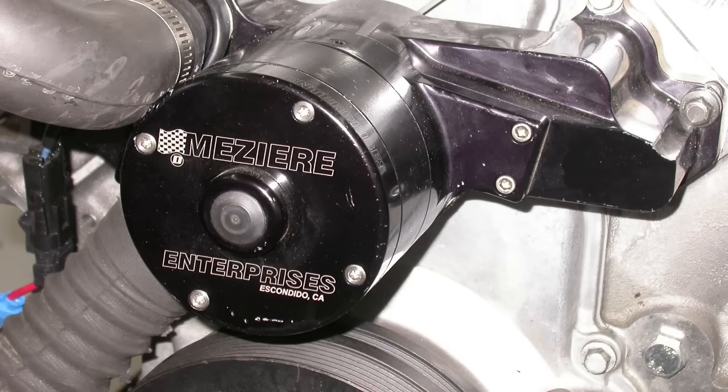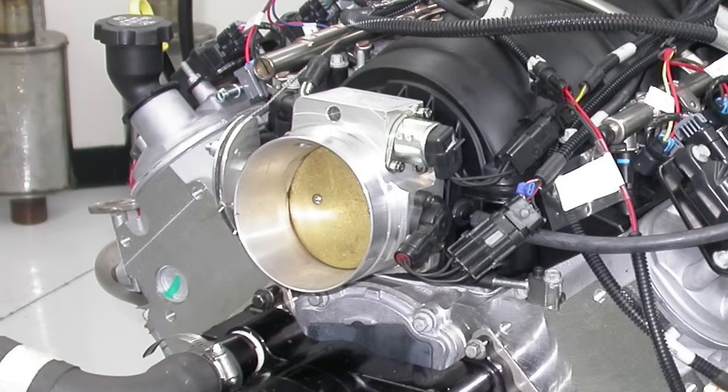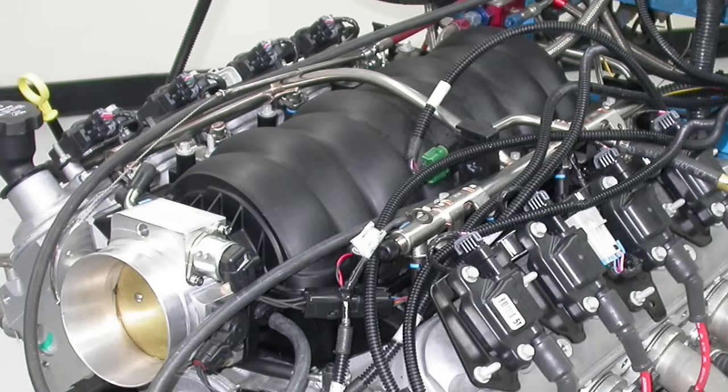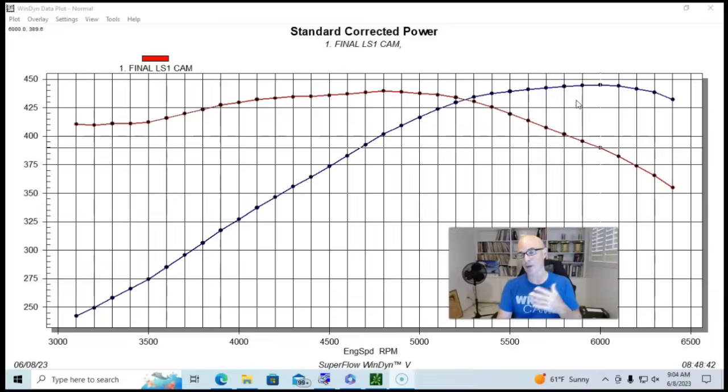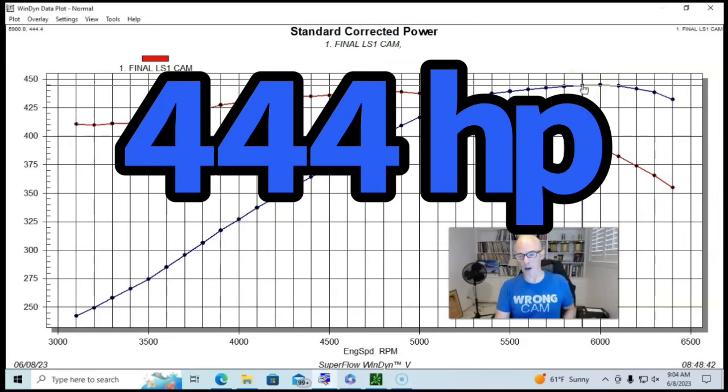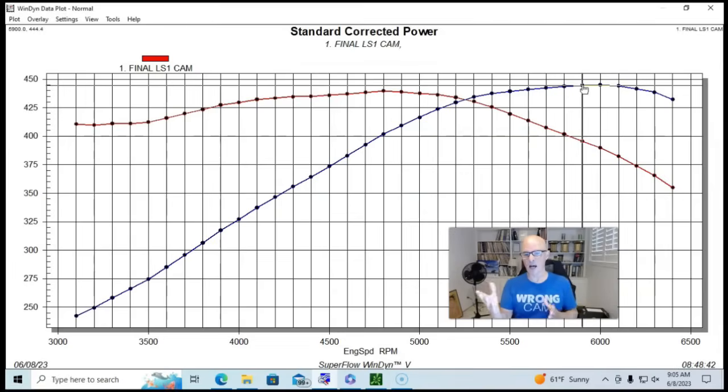This is our 5.7 liter LS1 with our Comp Extreme Energy cam and a valve spring upgrade. We ran both these motors in the same condition on the same dyno, with these long tube Hooker headers, optimized tune, Meziere electric water pump with no accessories, and an open throttle body. For those guys that want to know, when this thing was stock it made between 400 and 410 horsepower. This camshaft adds between 30 and 35 horsepower and a similar amount of torque.